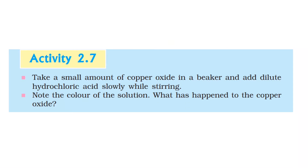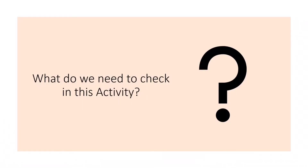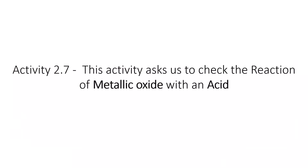We are going to do Activity 2.7, which is something you see in your book. Tell us — what are you going to do in this activity? In previous activities we have used acid to react with metals, metal oxides, metal carbonates, and metal hydrogen carbonates.